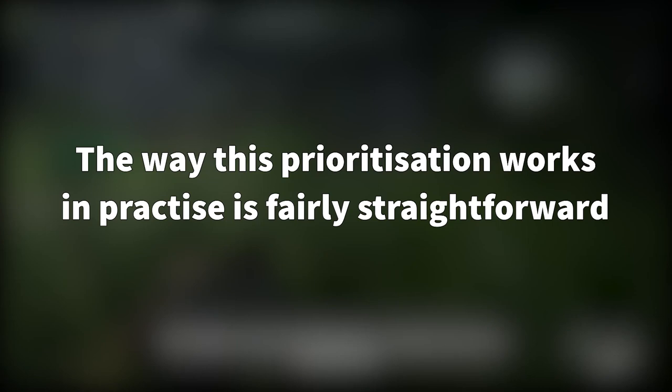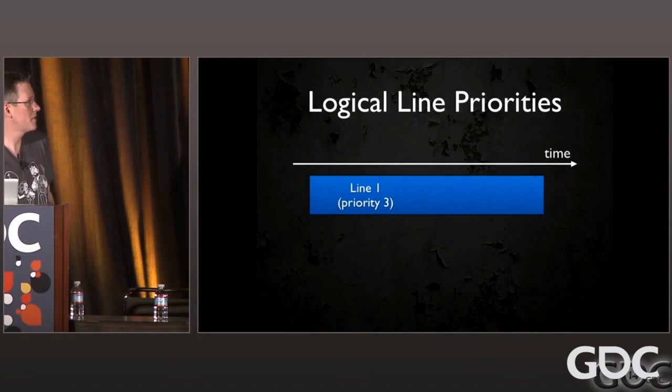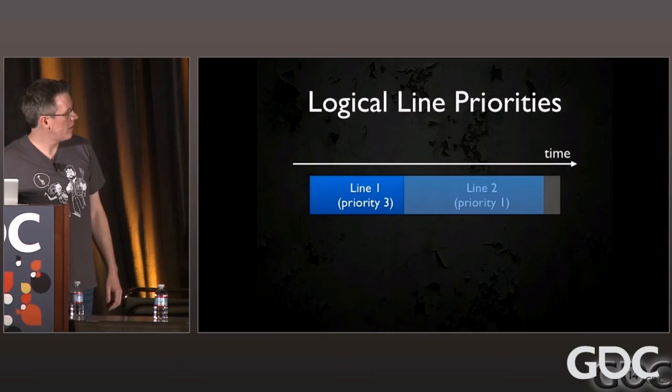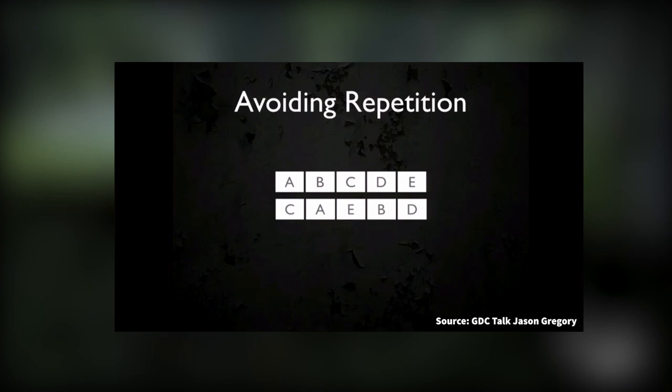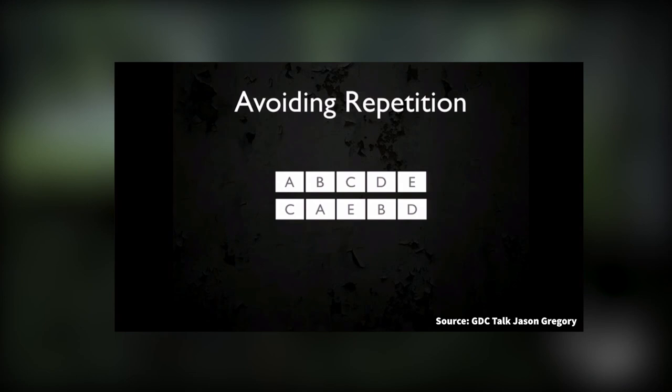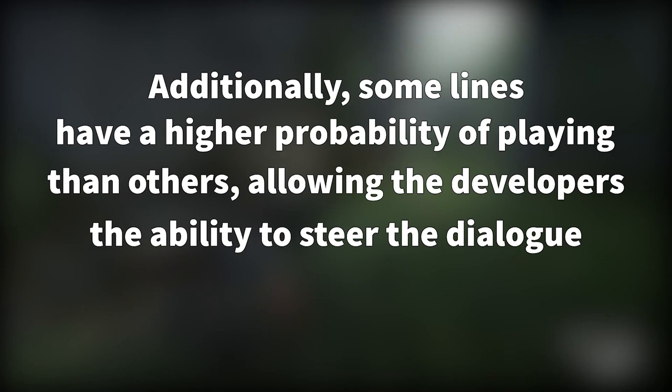The way this prioritization works in practice is fairly straightforward, as explained by Jason Gregory in his GDC talk on The Last of Us Part 1: "Line 1 is playing on a character, and if a lower priority line comes in, it's rejected, and if a higher priority line comes in, it'll interrupt." To avoid repetition, the lines are pre-shuffled with the rule that the last line played doesn't match the first line of the new shuffle. Additionally, some lines have a higher probability of playing than others, allowing developers to steer the dialogue towards certain outcomes as needed.